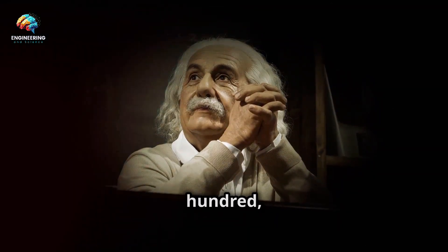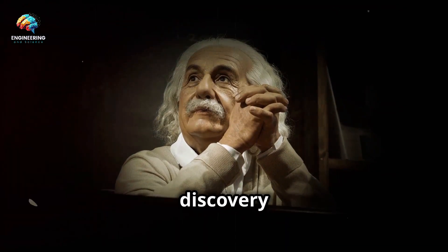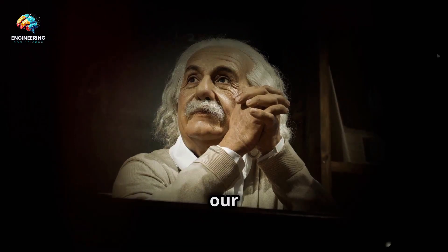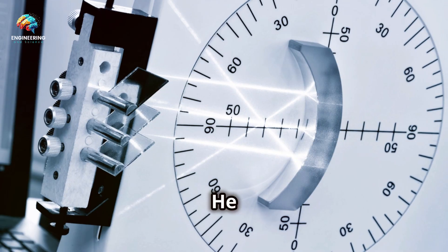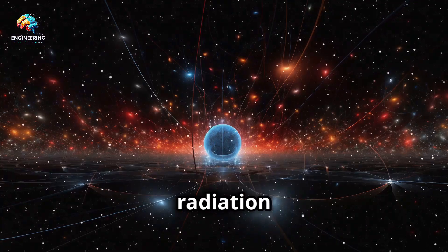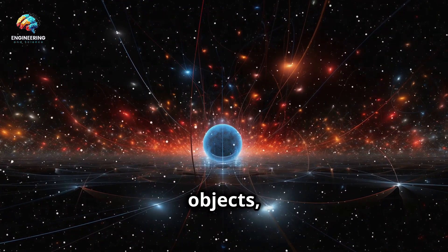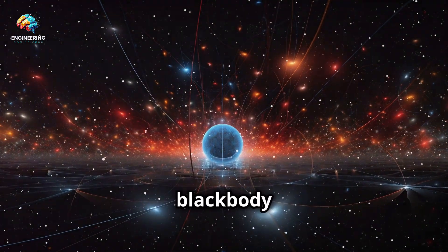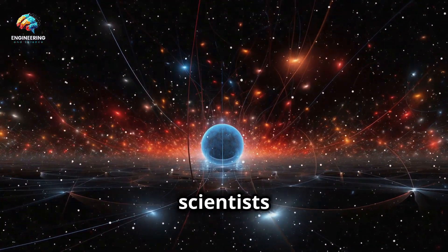In 1900, Max Planck made a groundbreaking discovery that would forever change our understanding of physics. He was meticulously studying the radiation emitted by hot objects, a phenomenon known as black-body radiation, which had puzzled scientists for years.